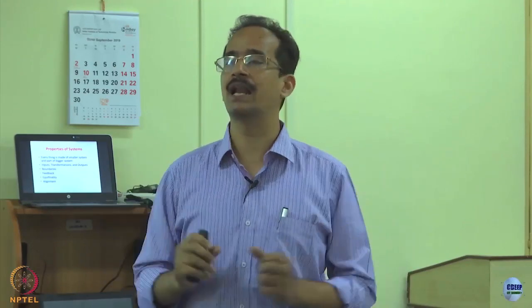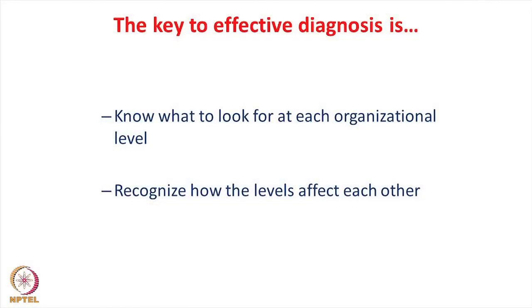Multiple ways can reach the same final outcome — that is the characteristic of equifinality and alignment. A system is good and healthy when its components are aligned to each other. The keys for effective diagnosis using a systems perspective are that we need to know what to look for at each organizational level, and we need to recognize how the levels are affecting each other. Here, level means the organizational level, group or department level, and individual level — three different systems within the organization, each with separate input, process, and output, all affecting each other.